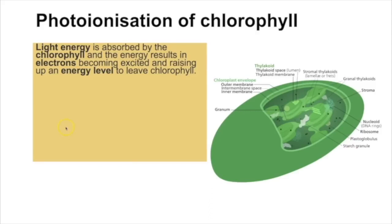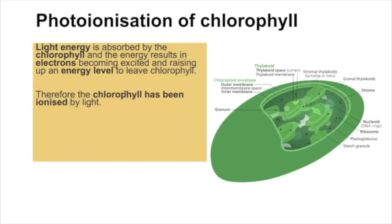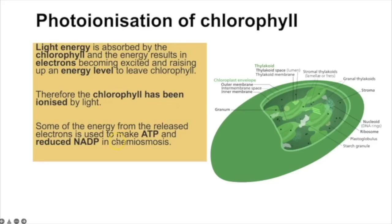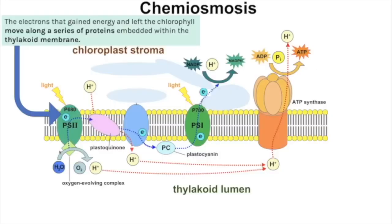Photo-ionization of chlorophyll: light energy is absorbed by the chlorophyll, and the ionization refers to the fact that this light energy causes the electrons to gain energy — we describe that as them becoming excited, raising up an energy level — and that causes the electrons to leave the chlorophyll, so the chlorophyll has been ionized. Some of the energy from the released electrons is used to make ATP and reduced NADP in chemiosmosis.